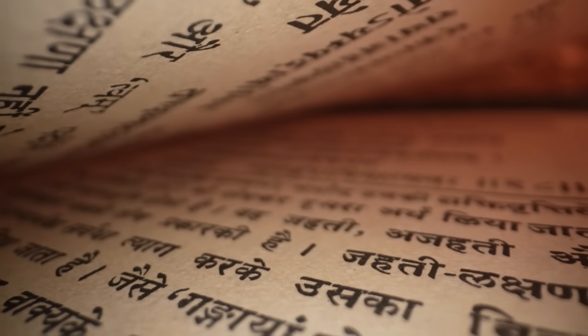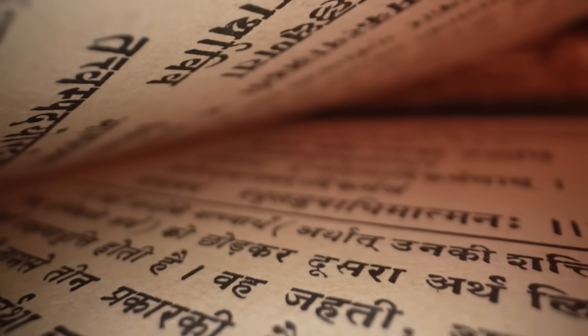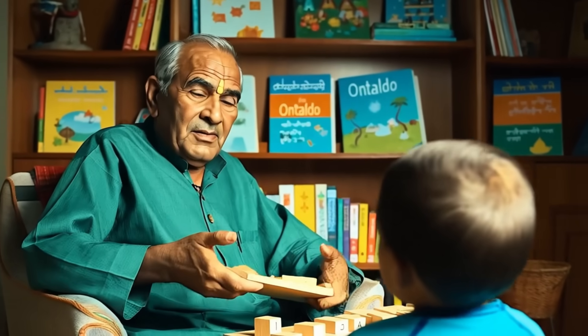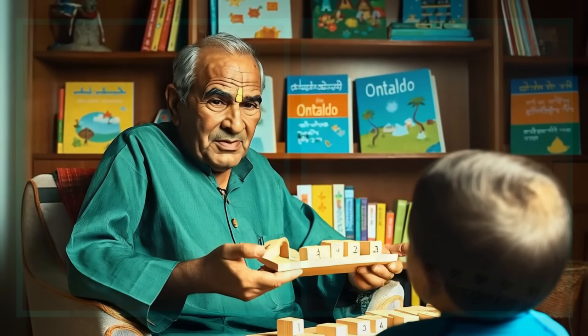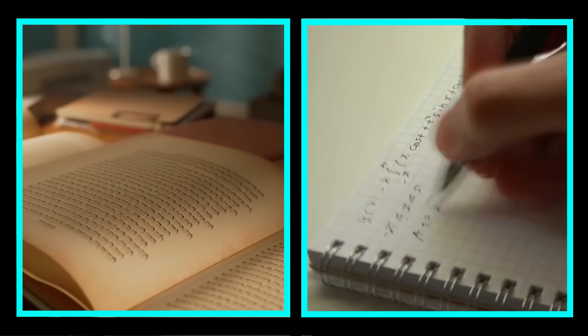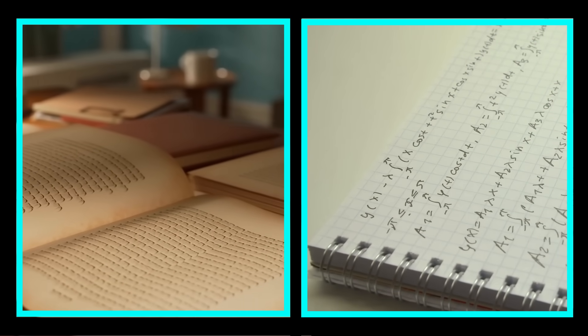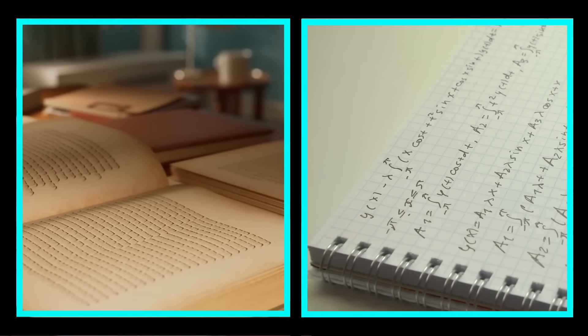He taught young Manjul that words could have structure, verses could have symmetry and that beauty often came from hidden patterns. This dual inheritance, mathematics from his mother and poetry from his grandfather, was more than cultural richness. It was the beginning of a mind trained to see connections where others saw none.